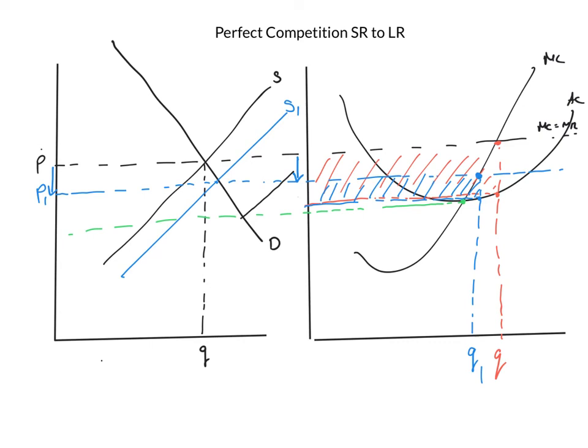And firms will keep entering until the profit is reduced to that point. And at that point, we have normal profit. And that is where the market will settle in the long run. That is long run perfect competition.